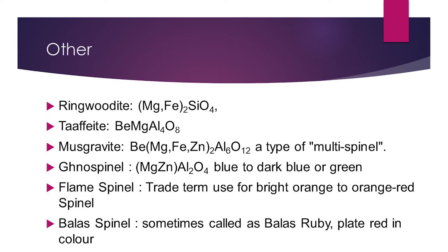Apart from those five categories, there are some others. For example, taaffeite — a beryllium magnesium aluminium oxide — is considered one of the rarest gemstones in gemology. It does not belong to the general spinel classification but comes under the spinel family. Flame spinel and balas spinels also fall under the spinel family but do not fit neatly into the previous five categories.